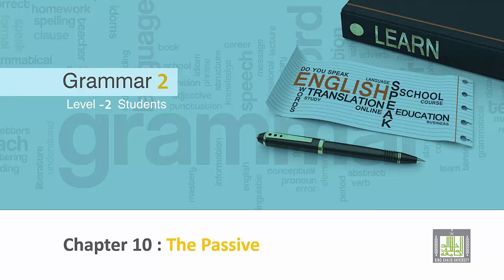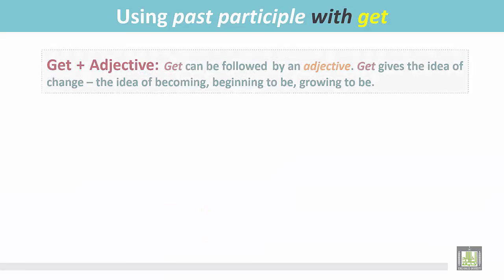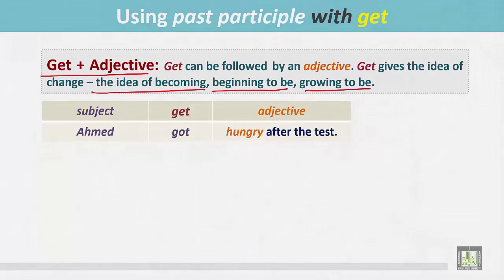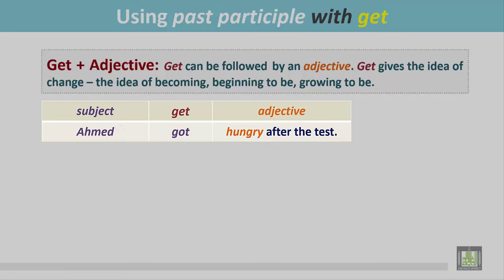Grammar 2 for Level 2 students, Chapter 10: the passive using past participle with 'get.' Get plus adjective — get can be followed by an adjective. Get gives the idea of change, the idea of becoming, beginning to be, growing to be. See the example: Ahmed is the subject and the verb is 'got,' followed by the adjective 'hungry.' Ahmed got hungry after the test.